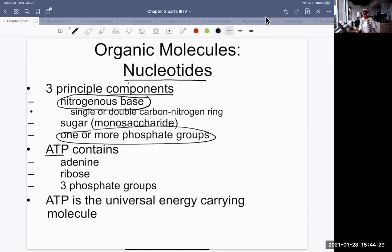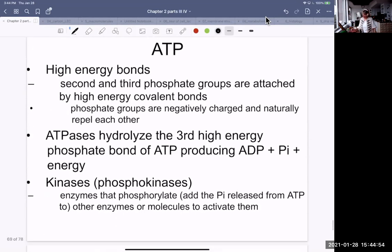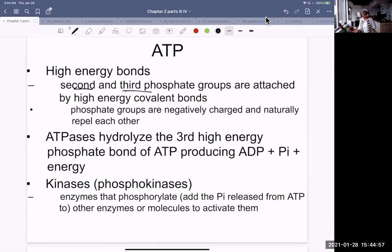The particular components of adenosine triphosphate is adenine, a nitrogenous base, ribose the sugar, and three phosphate groups. As we saw before, those phosphates, because they're negatively charged, are unstable, and that makes it such a good energy molecule, very high-energy bonds. The second and third phosphate groups are attached by very high-energy covalent bonds because they are unstable bonds. Those negative charges are repelling each other.